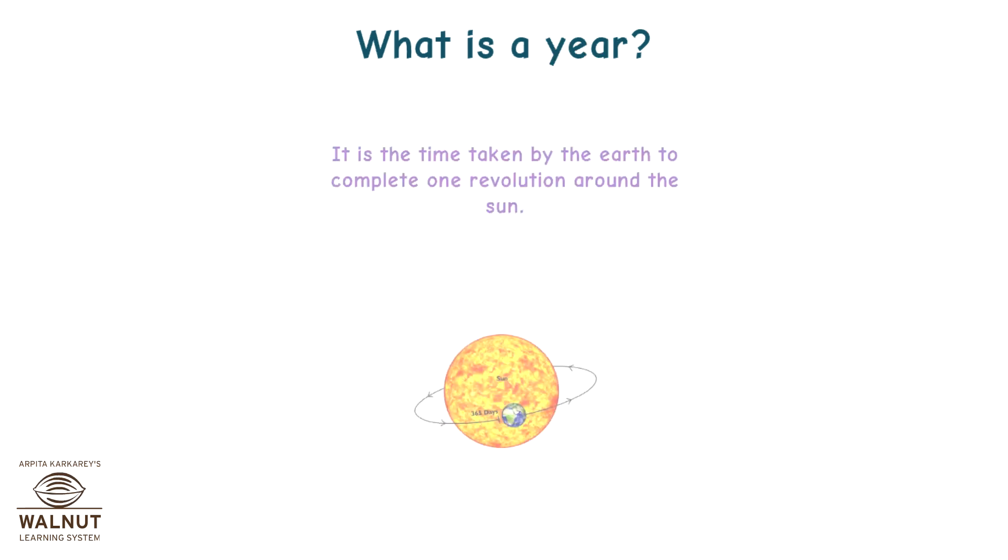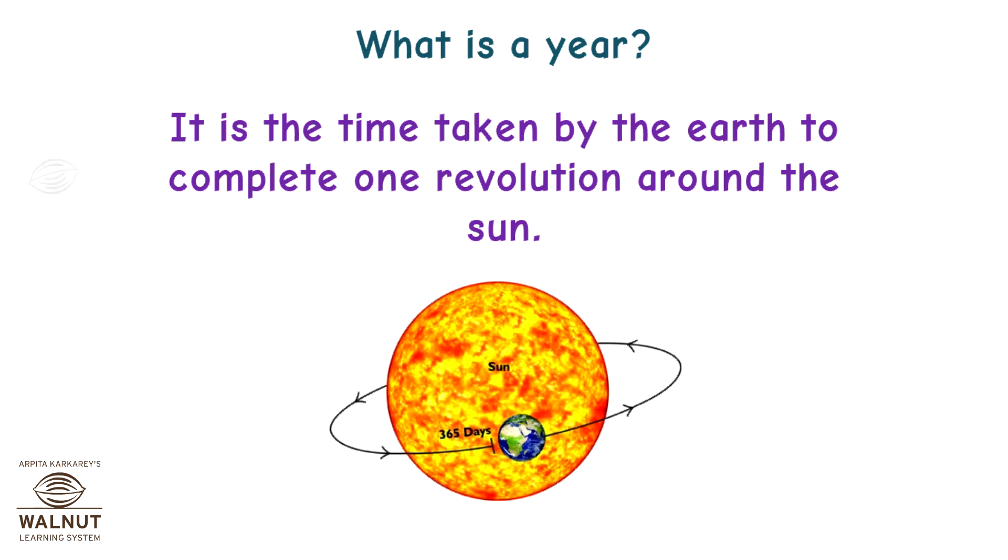What is a year? It is the time taken by the earth to complete one revolution around the sun.